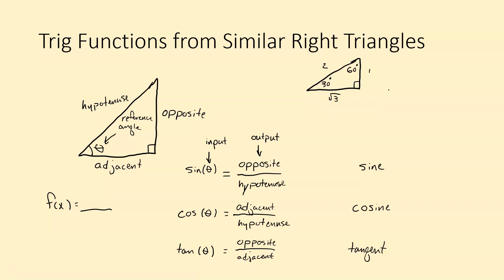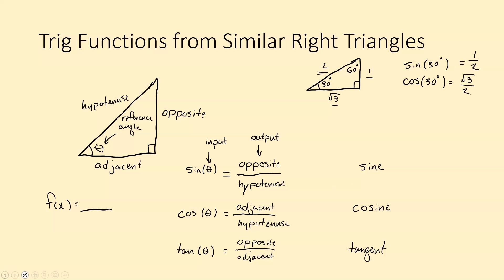To connect this to our special right triangles: the sine of 30 degrees, where 30 degrees is our reference angle, would be opposite over hypotenuse — so sine of 30° equals 1/2. The cosine of 30 degrees is adjacent over hypotenuse, so that would be √3/2. We plug in the angle measure and out comes the specific ratio for the sine, cosine, or tangent function we're using.